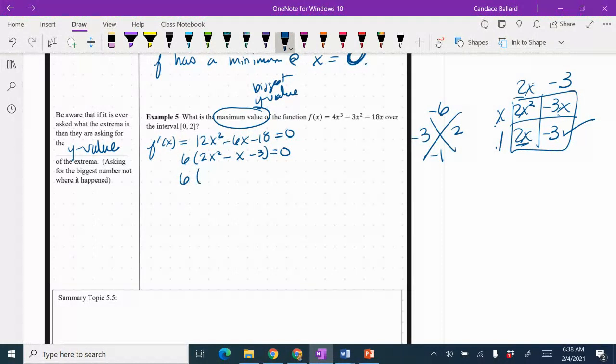2x divides 2x once, and we check 1 times negative 3 is negative 3. So I've got 6 times 2x minus 3 times x plus 1 equals 0. I use zero product property to break up all my factors and set them equal to 0. This one doesn't get us anything. We're going to add the 3 and divide by 2, and then we're going to subtract the 1.